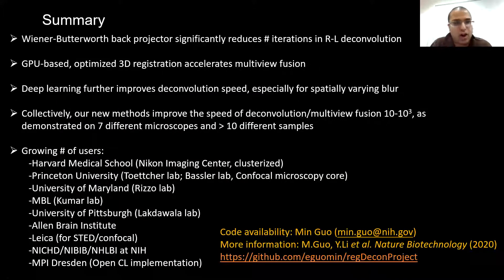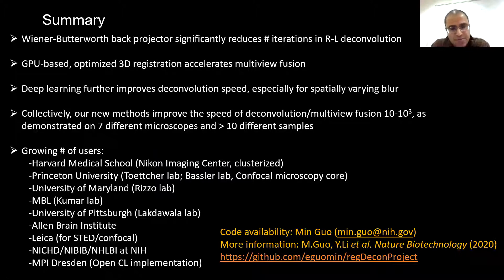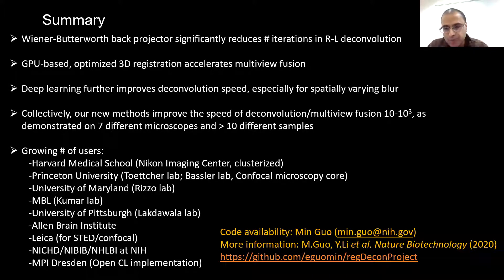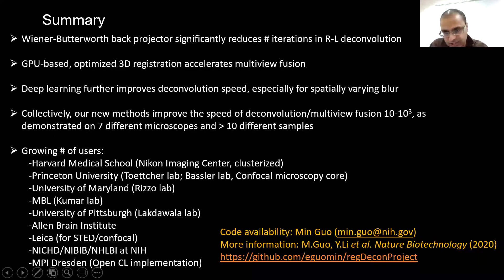To summarize: I told you about a trick where you modify one term—the back projector b—in Richardson-Lucy deconvolution to significantly reduce the number of iterations. I told you about a GPU-optimized 3D registration method for multi-view fusion, also useful for stitching data. And deep learning further increases speed especially for difficult scenarios where blur varies across the field of view. Putting these together gives orders of magnitude improvement in post-processing speed, working across many different kinds of microscopes. The code is all freely available; you can read our paper in Nature Biotechnology and the code is on GitHub, or just email us.